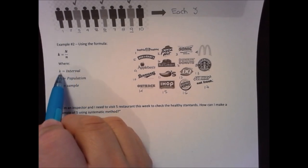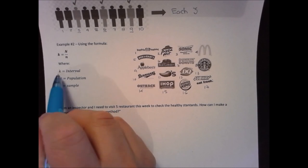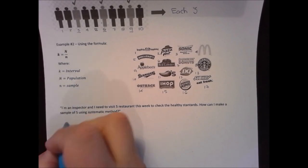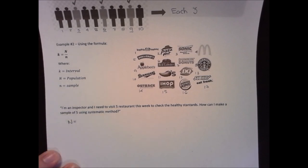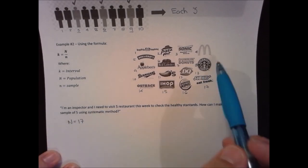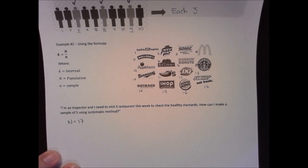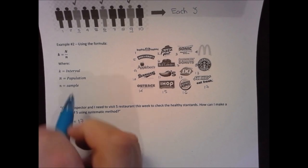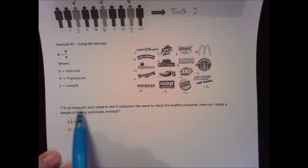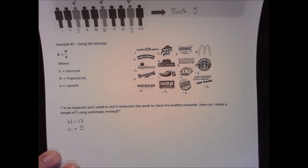We need to calculate k, the interval. What is N? N is the population — how many restaurants in total do we have? We have 17 restaurants, and these 17 represent our population, which is a finite population because we know exactly the number of elements. Then n is the sample — the inspector needs to visit five restaurants, so the sample is five.